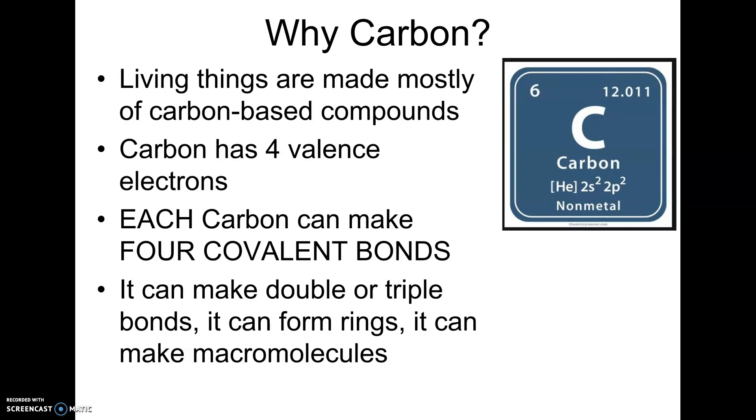Now, if you remember, things want to have, elements want to have eight or a full outer shell, right? And they're going to either gain, lose, or share in order to get eight. So if they have only one or two, they're probably going to lose because it's really easy to lose one or two electrons and that means they're probably going to form ionic bonds because they're going to lose electrons and something else is going to pick them up.